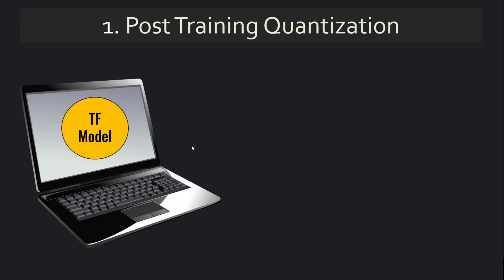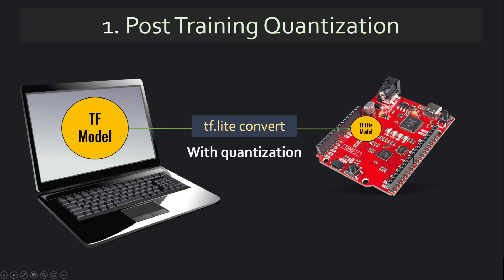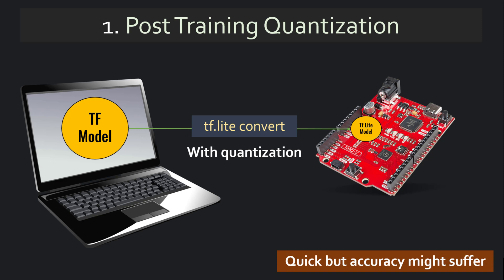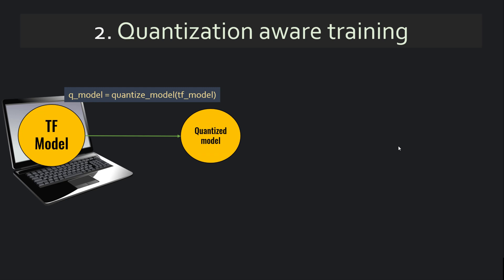There are two ways to perform quantization in TensorFlow: post-training quantization and quantization-aware training. In post-training quantization, you take your trained TF model and use the TFLite converter. TFLite is used to convert models into smaller ones for deployment on edge devices. When you do this conversion it already reduces the size due to a different memory format, but if you apply quantization at the time of conversion it makes it even smaller. This is a quick approach, but the accuracy might suffer.